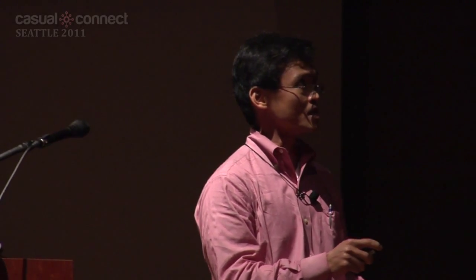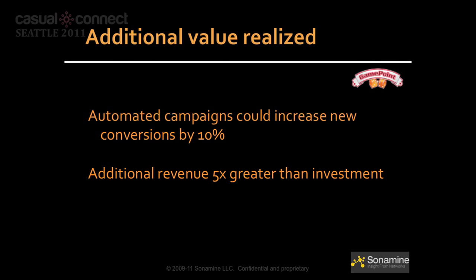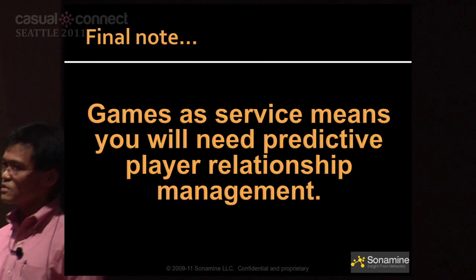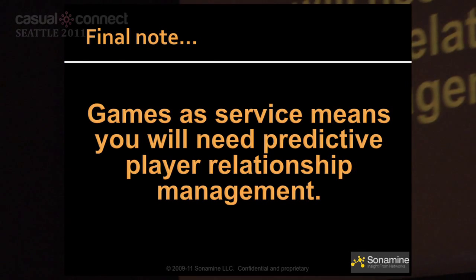The key takeaway: you spend a lot of money to bring players into your system. Getting those who are close to paying you across that final hump — first step is to find them, and that's what predictives do. When you run Games as a Service over a two to three year lifetime, you need a predictive player management system — something telecoms have been doing for years, and we're bringing it to the games business.